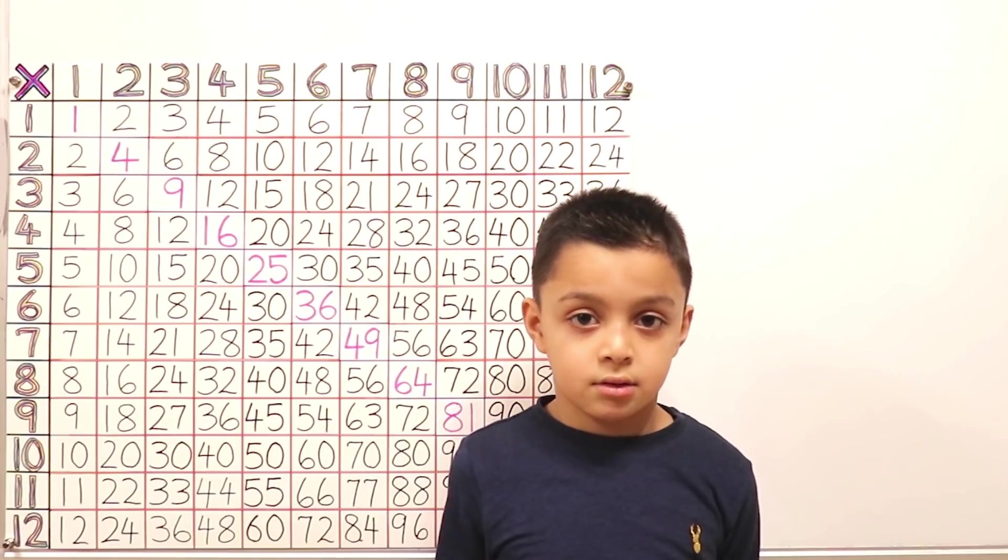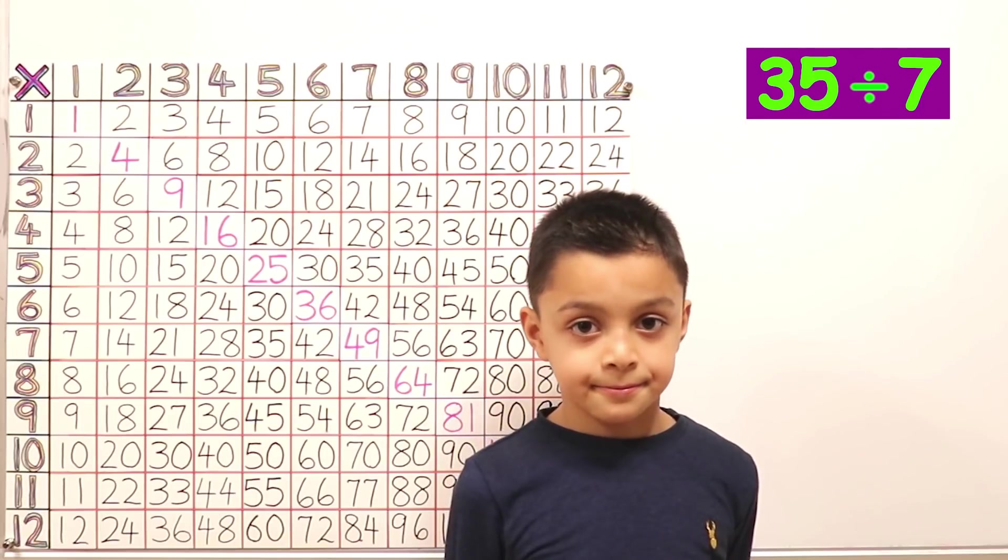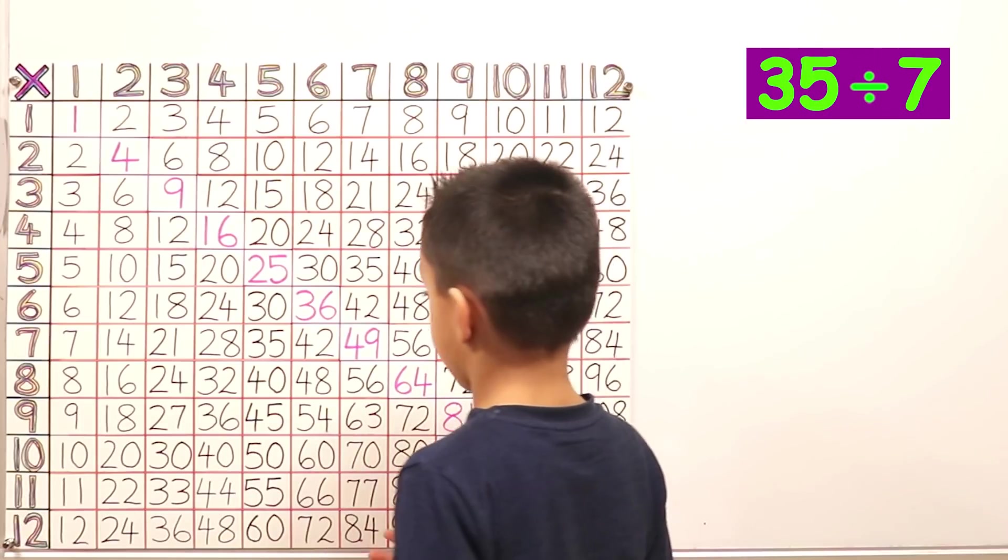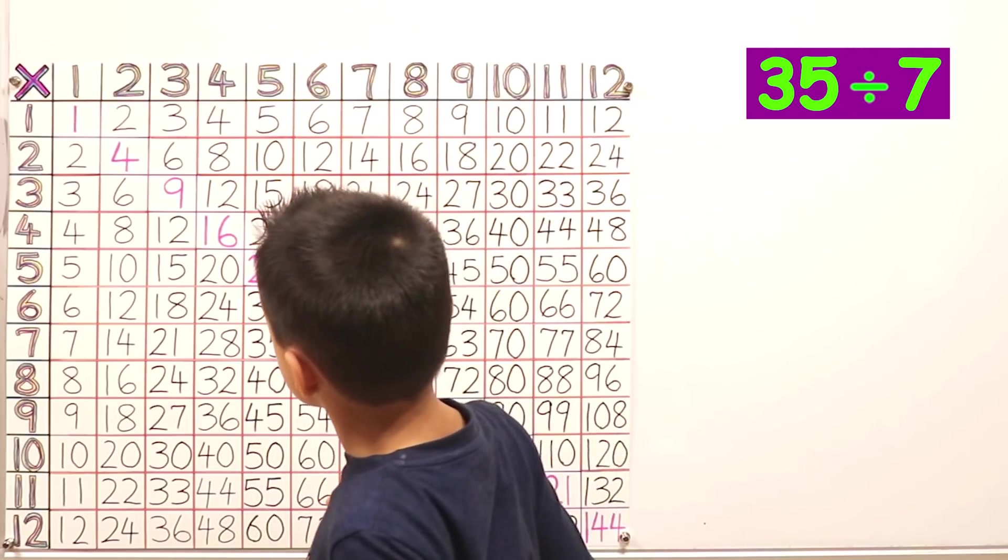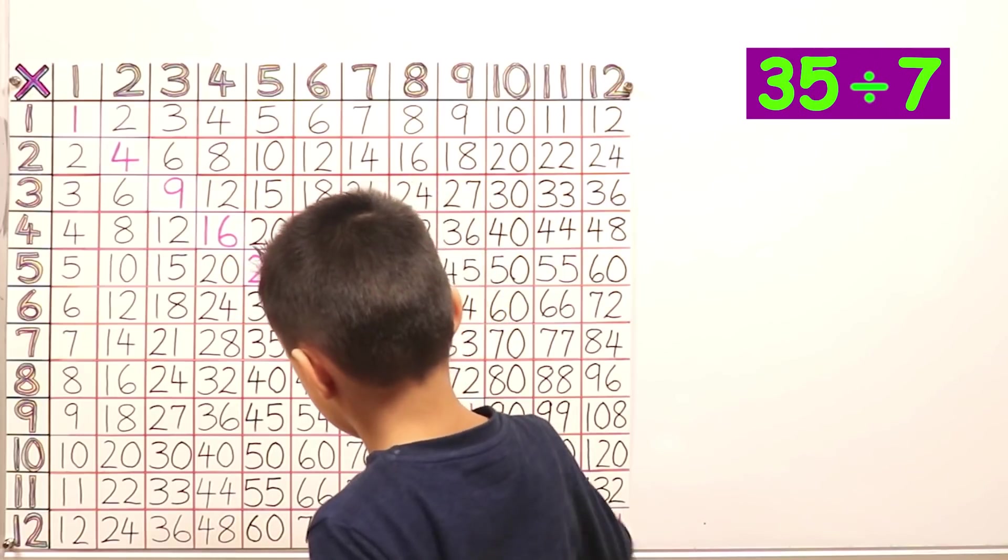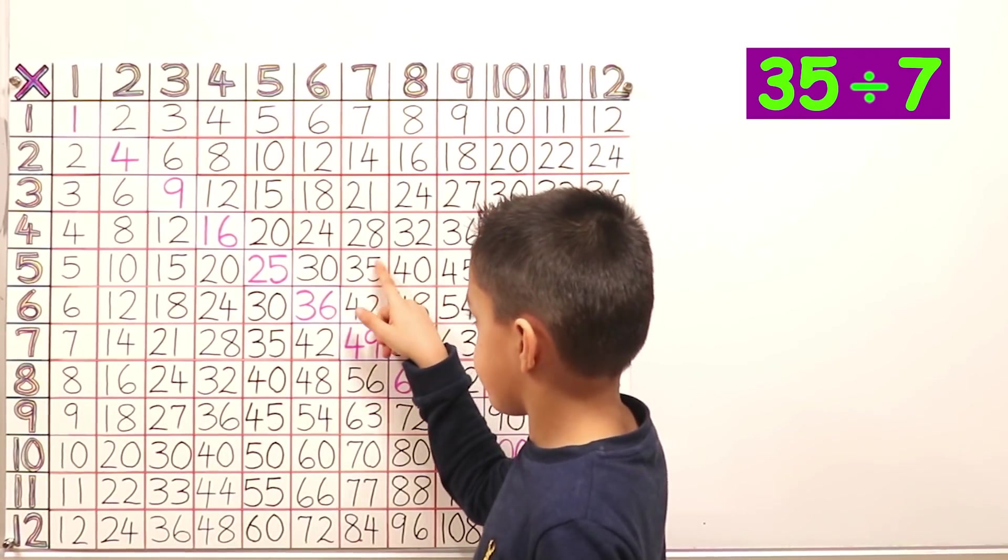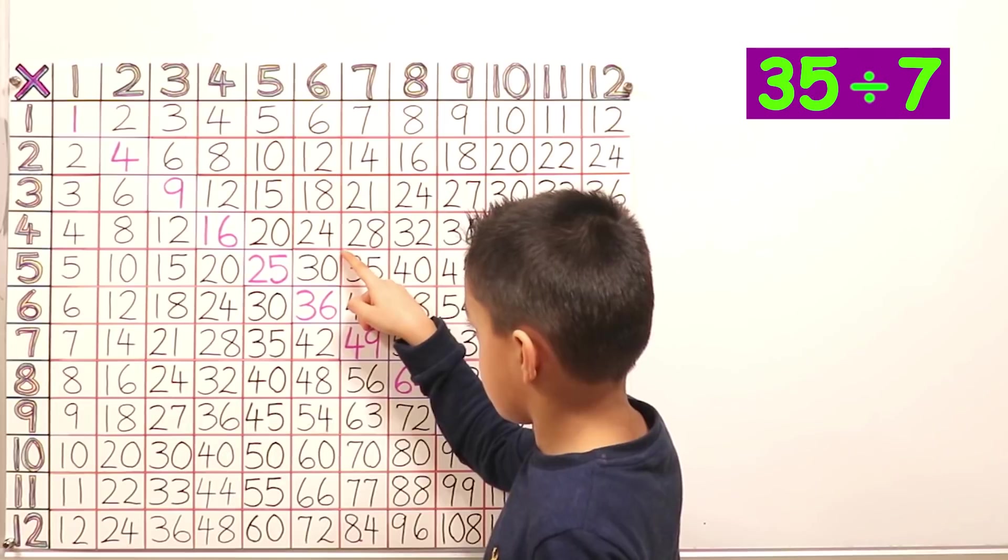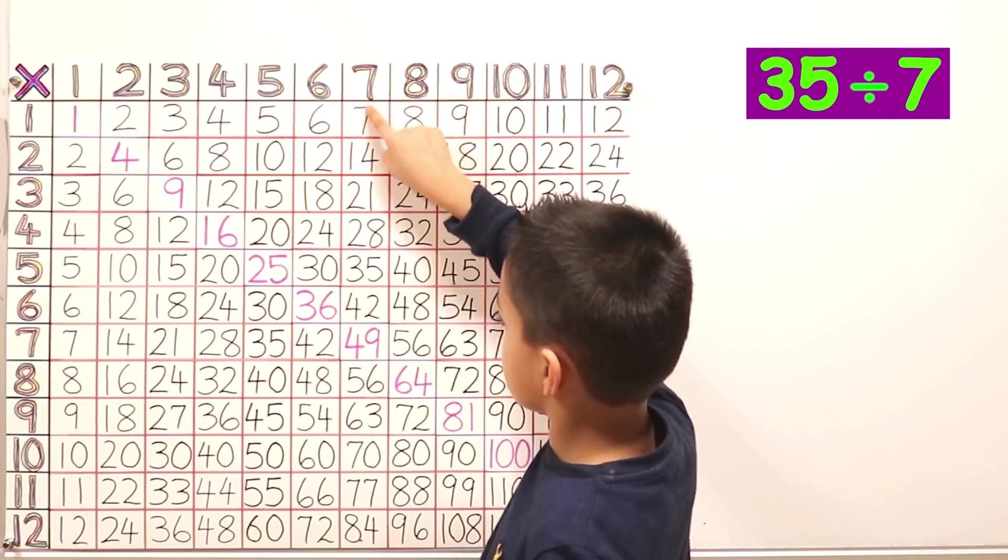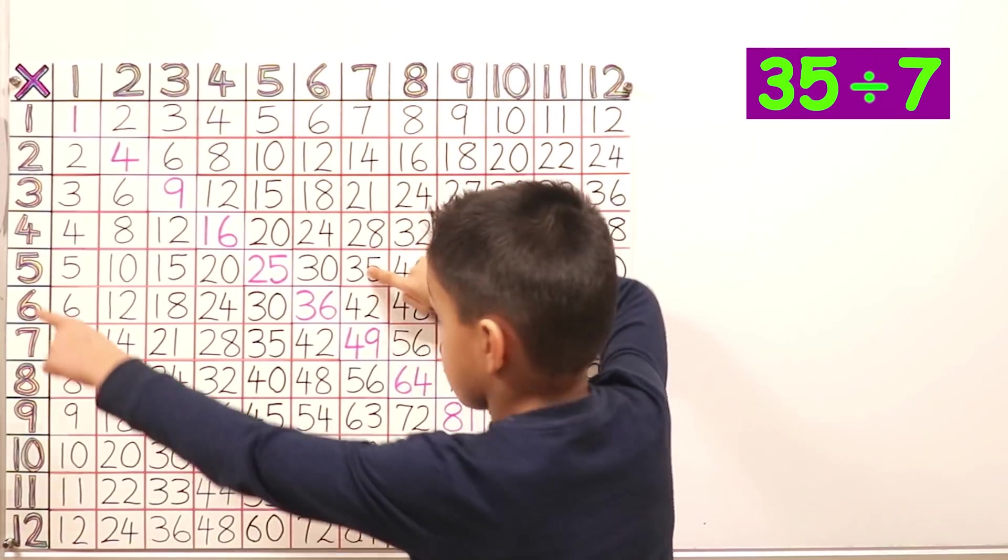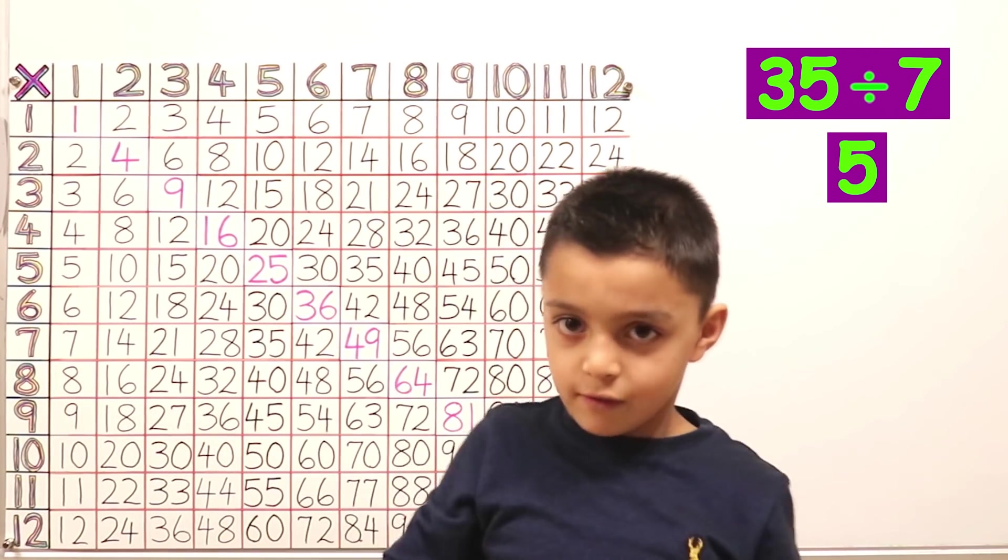So can you tell me what thirty-five divided by seven is? Thirty-five divided by seven. So what are you looking for? What are you looking for? Thirty-five. Can you stand to the side so we can see? Well, you've found the thirty-five that you need, but what you should really do is find the times tables that we're dealing with. Seven. So seven and then go down until you get to thirty-five and now go across. Thirty-five divided by seven equals five. Five. Very good.